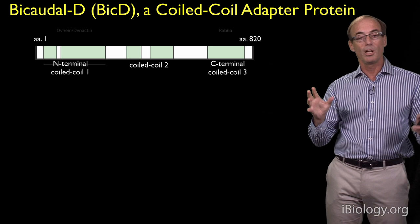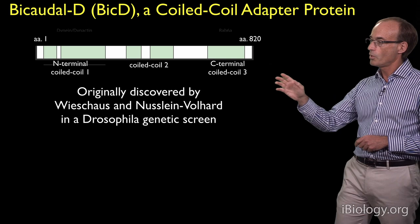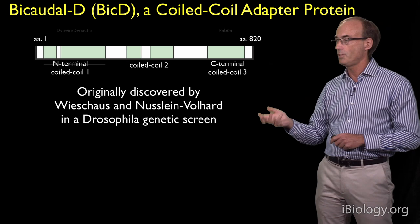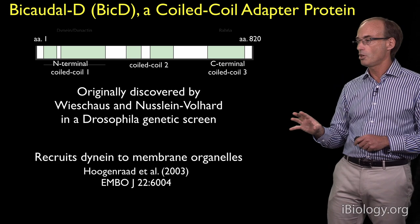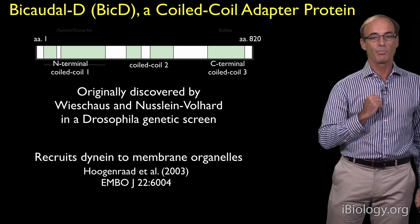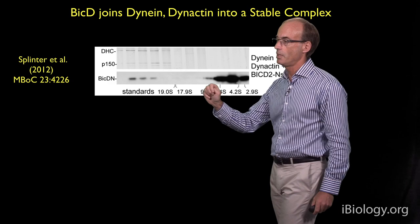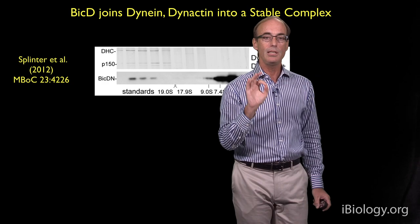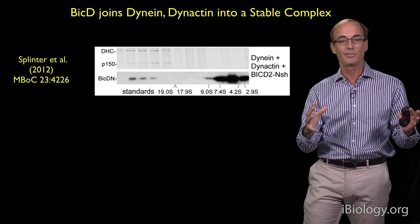BicD is a much smaller protein and is composed of several coil-coils. It was originally discovered in a Drosophila genetic screen by Eric Wieschaus and Christiane Nüsslein-Volhard. Subsequently, it was shown that this BicD is involved in recruiting dynein to membrane organelles. An important piece of work was done by Splinter and colleagues, where they showed that BicD can join dynein and dynactin into a stable, interacting complex. This was shown in a sucrose gradient where all three of these components are combined and co-migrate together in a very large molecular weight complex.